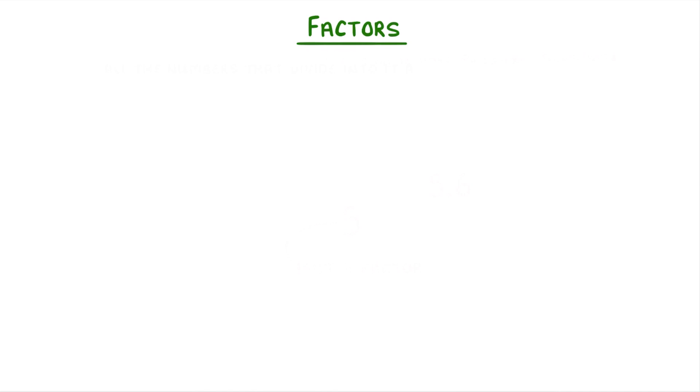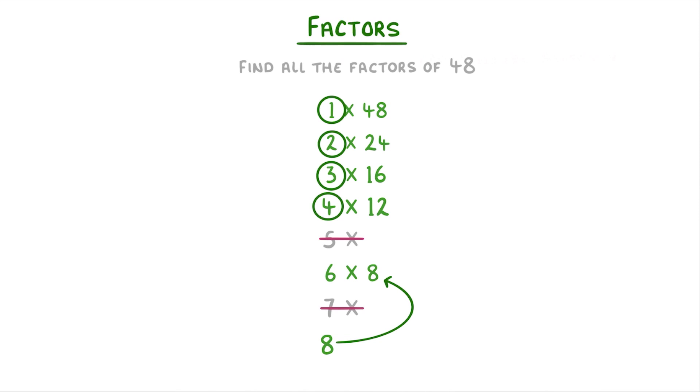If you want to quickly find all the factors of a number, the best thing to do is write out all the factors starting with 1 times the number itself. So if we wanted to find all the factors of 48, we'd start with 1 times 48, then do 2 times 24, and so on with 3 times 16, 4 times 12. 5 doesn't go into 48 so isn't a factor, then we have 6 times 8. 7 also isn't a factor, and then we get to 8 which we've actually already covered in 6 times 8, so we can stop here. And we know that our factors in ascending order are 1, 2, 3, 4, 6, 8, 12, 16, 24, and 48.